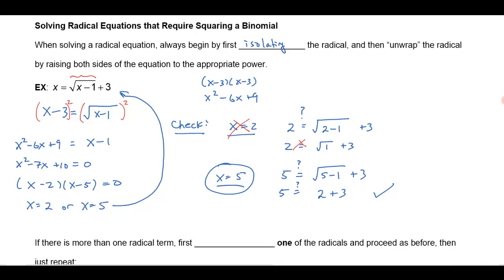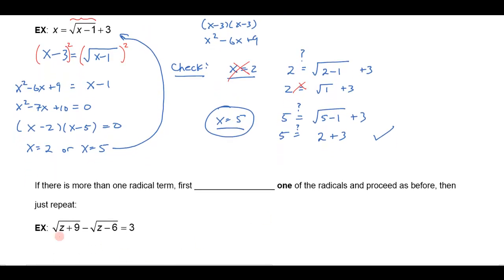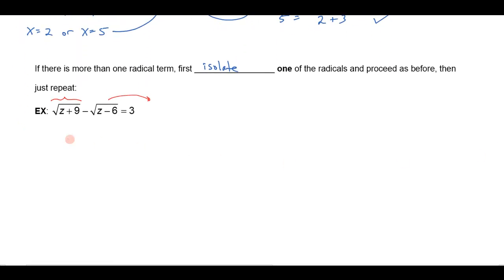Now if there's more than one radical term, let's go on to another example. Here's one that has two radicals. You need to first isolate at least one of the radicals as we did before and then just proceed as we did. So in this case, I have two radicals but I want to get one of those radicals all by himself on one side. Let's take this negative square root over on the other side so that this square root is left all by himself.